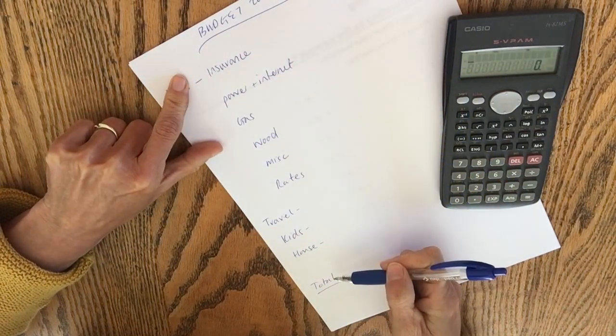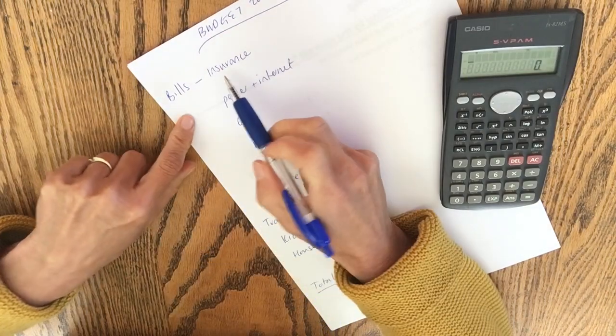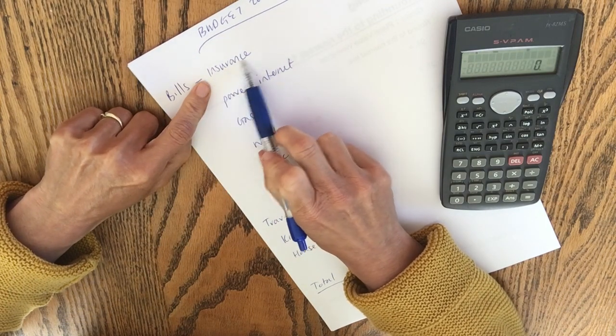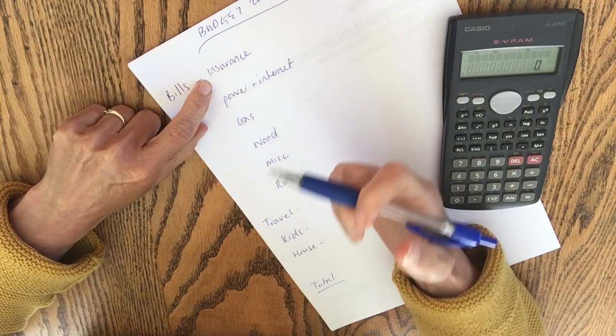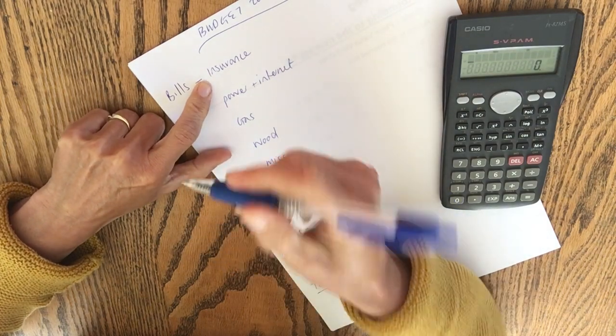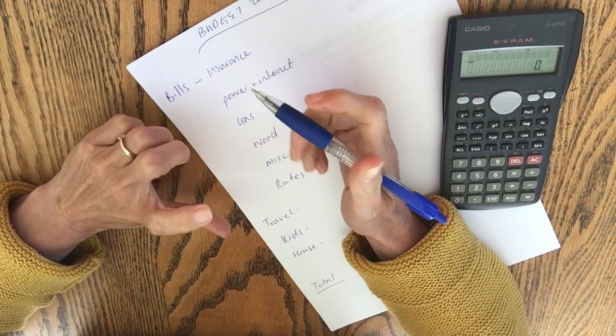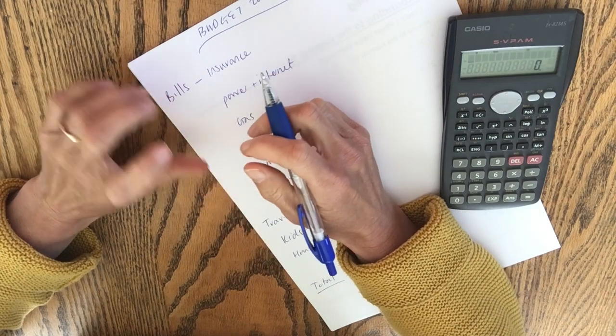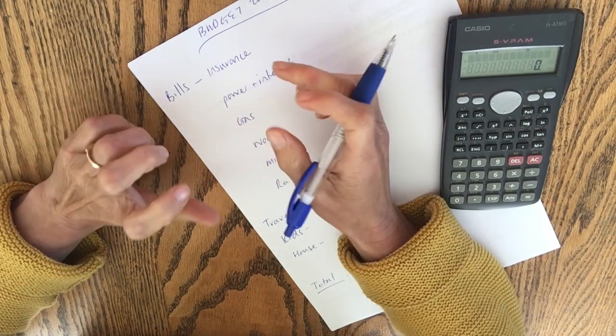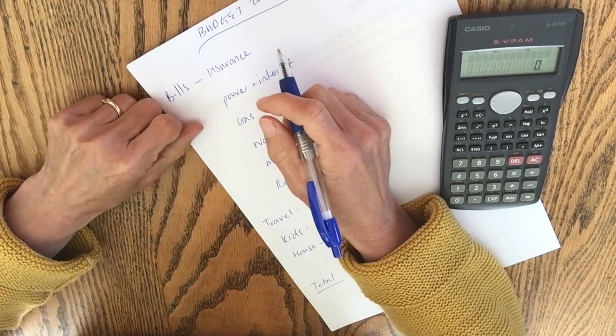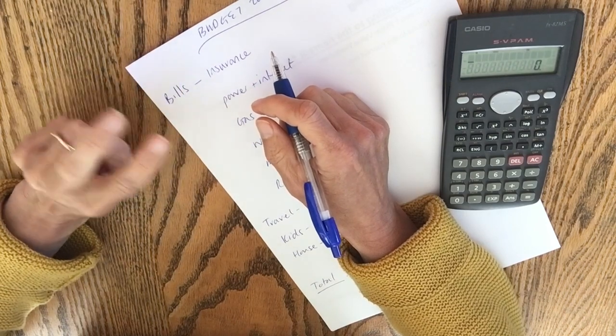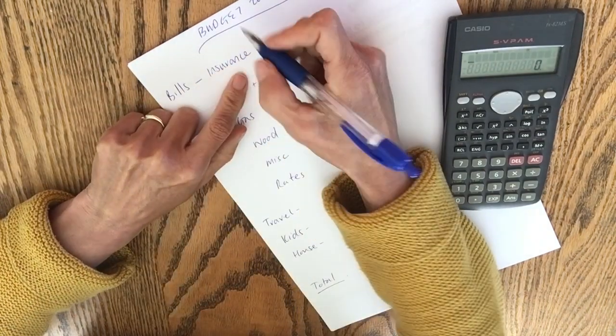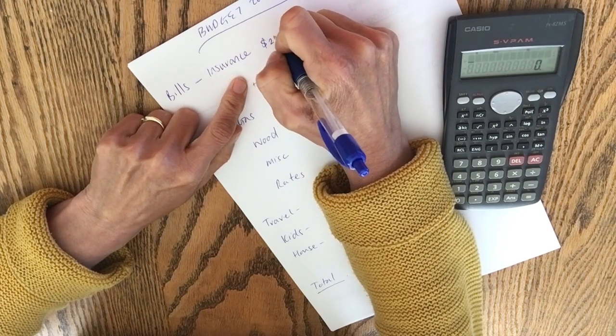So once I've got these written down, I go back into the bills section and I actually go into each one of these providers. So I look back on my insurance and say, okay, how much did insurance cost us in 2023? So the only thing we have insured is our physical house. We don't have contents insurance and we no longer carry life insurance because we feel like we're at a financial point where we're comfortable. If one of us passed away, the other would be fine to look after the children.